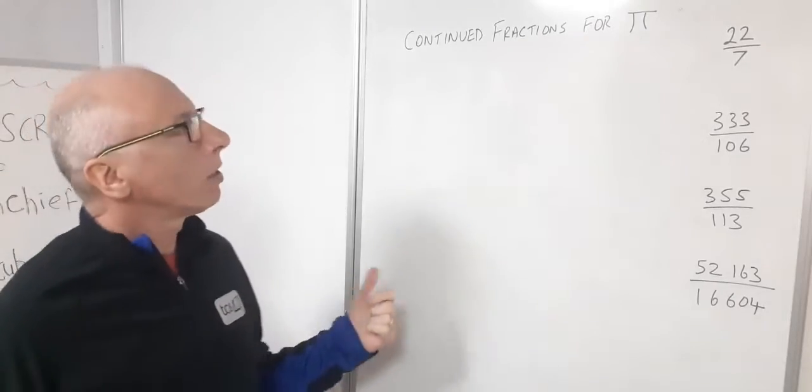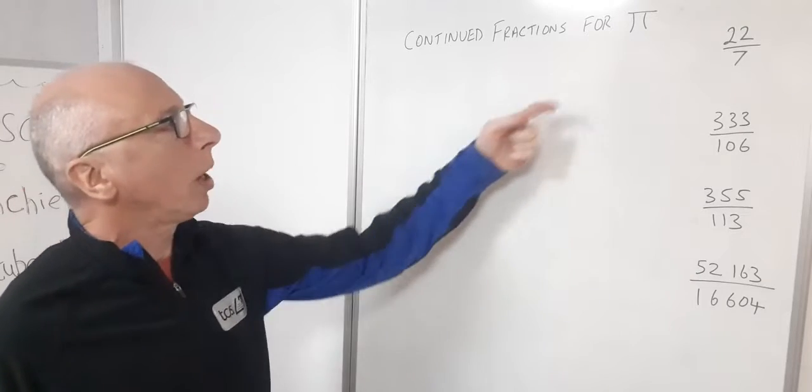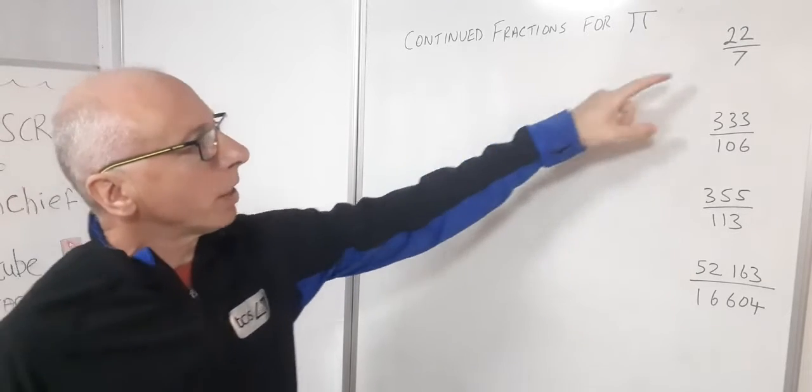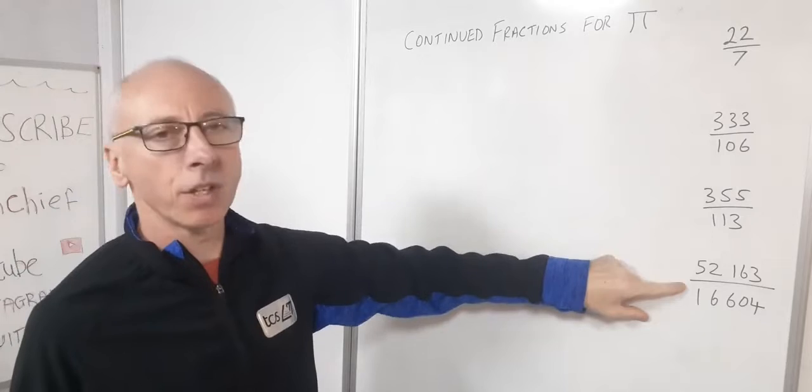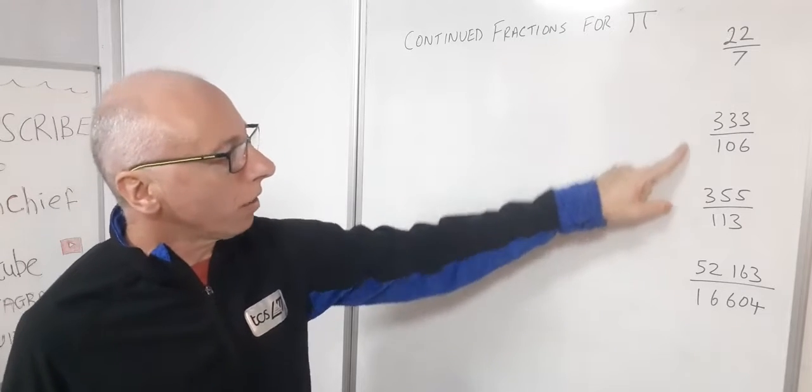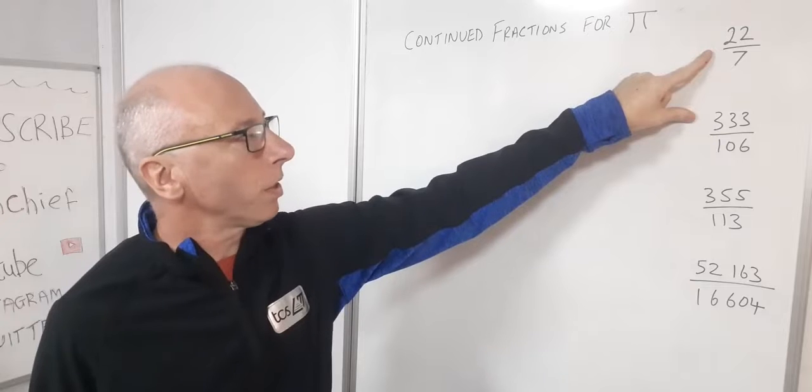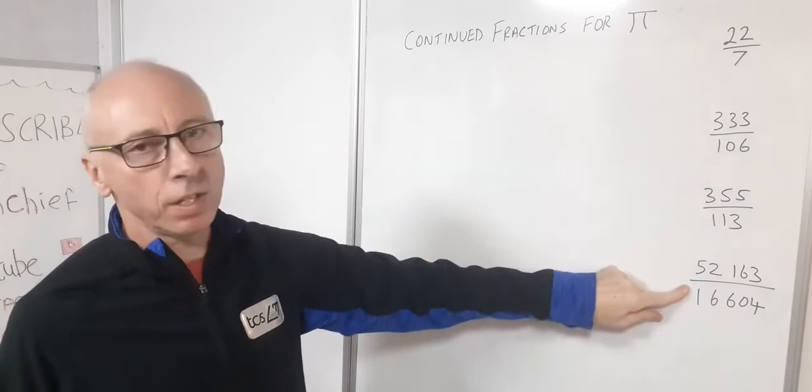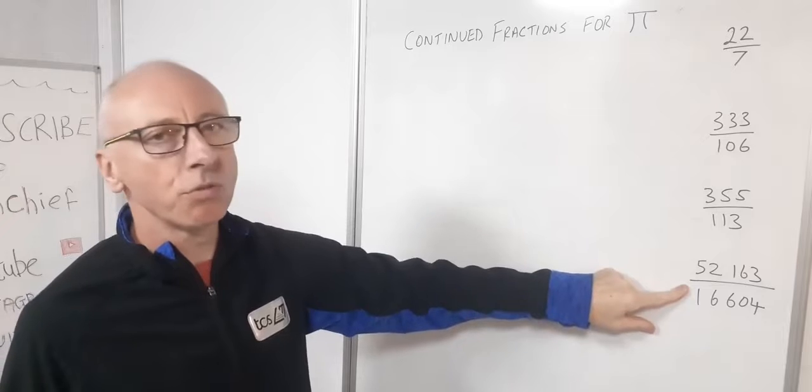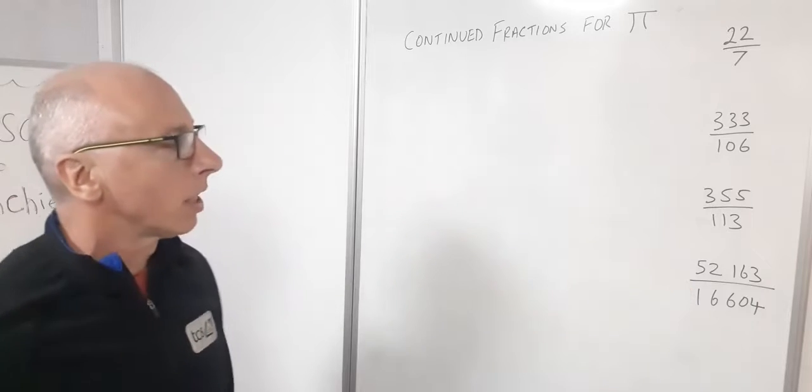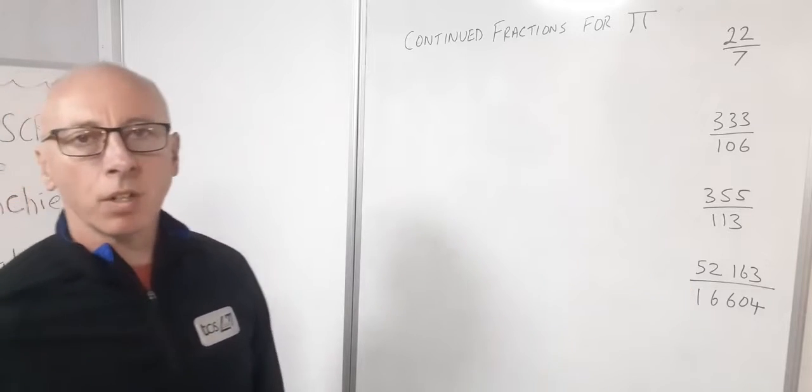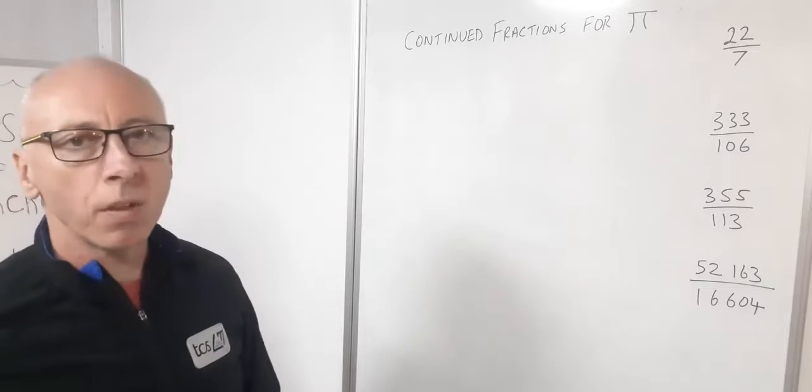In this video we are going to look at some continued fractions that represent pi, and in particular some of the estimations of fractions over the years. These are four that I have picked out. This one is from a few thousand years ago, this one is a little bit more recent but it's still hundreds and hundreds of years ago. Let's have a look at these as continued fractions and see what they look like.